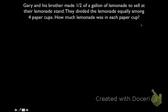So let's take this problem for example. Gary and his brother made 1 half of a gallon of lemonade to sell at their lemonade stand. They divided the lemonade equally among 4 paper cups. How much lemonade was in each paper cup? First thing we want to do is try to figure out what this problem is asking us. What is our dividend? What is our divisor? Well, if we go through this, we see that he has 1 half of a gallon of lemonade...